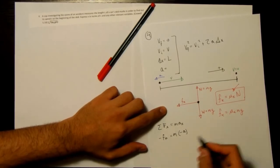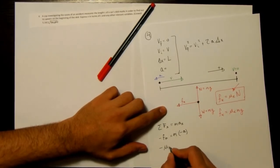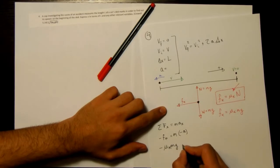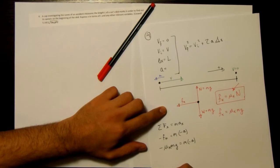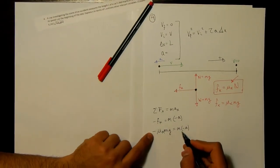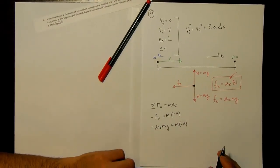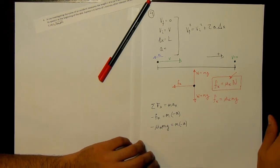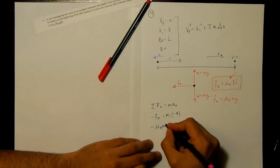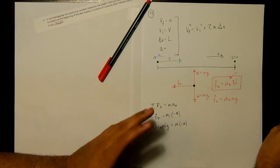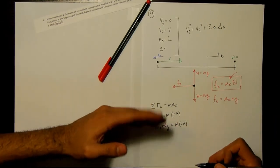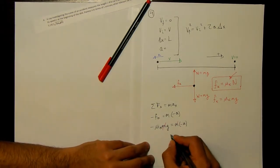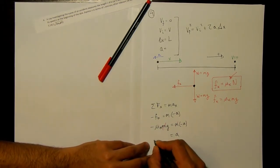And when I plug in what I have for fk, I have negative mu k mg equals m times negative a. It can multiply by negative 1 on both sides. That's going to cancel out. It'll be positive on the next one. And then the mass will also cancel out. So that's where your mass is canceling out. So it doesn't really matter what the mass of the car is. We're going to get the same answer. And a equals mu k g.